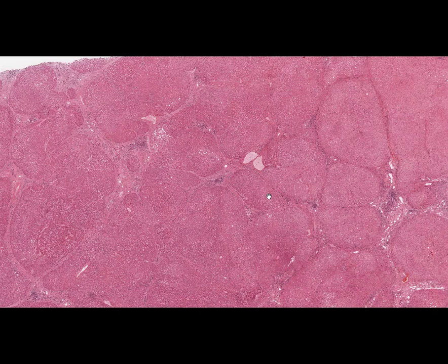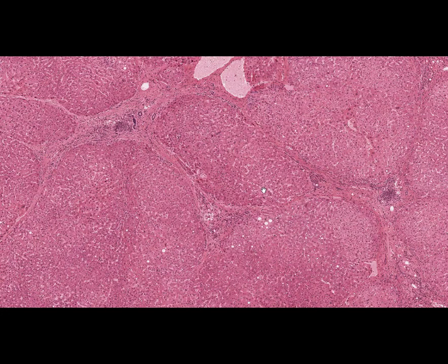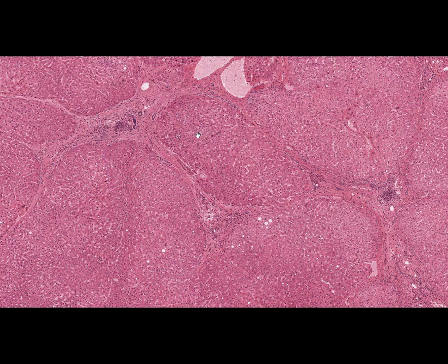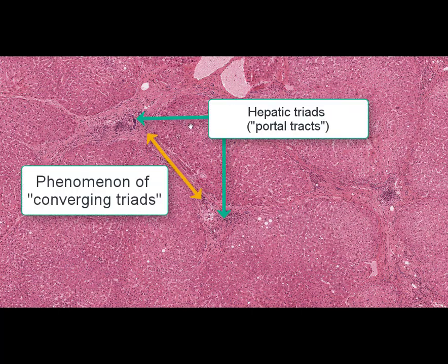These lobules are false, as they have no central vein and no typical arrangement of hepatocytes in the form of beams within those lobules. These are the characteristic features of false lobules.